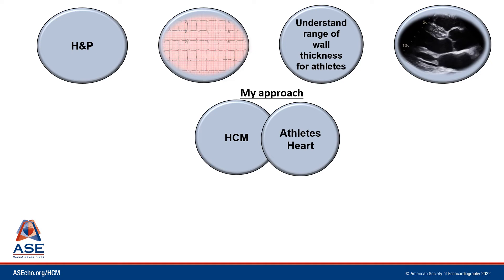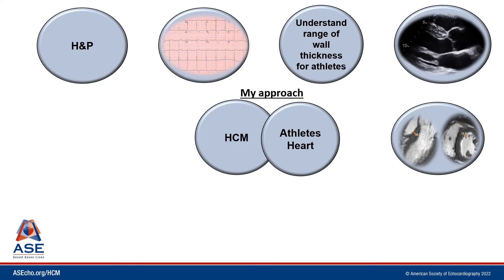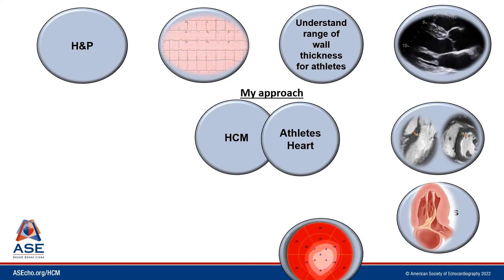Athletes often will have eccentric hypertrophy as opposed to the asymmetric hypertrophy seen in hypertrophic cardiomyopathy. We'll evaluate diastolic function, which is usually abnormal in patients with hypertrophic cardiomyopathy, although not always the case in athletic patients with HCM. We'll also make sure we're measuring wall thickness correctly, not including structures like the RV trabeculation, and we'll look at the mitral valve apparatus, where we see abnormalities in about 70% of patients with HCM, often associated with LVOT obstruction at rest or with provocation.